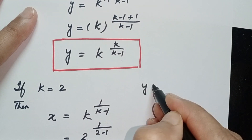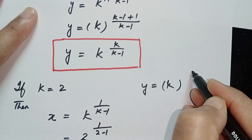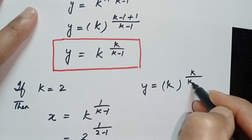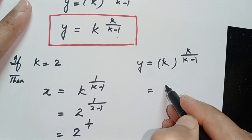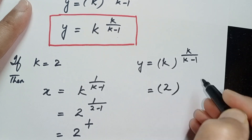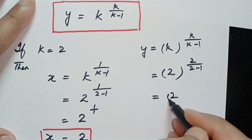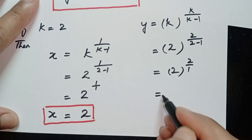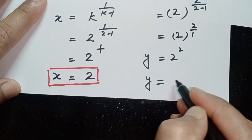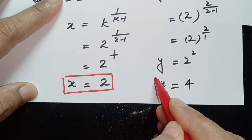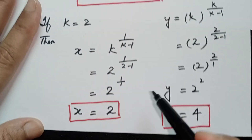Now we find y. y is equal to k to the power k over k minus 1. Plugging in k equal to 2: y is equal to 2 to the power 2 over 2 minus 1, which is 2 to the power 2 over 1, so 2 to the power 2. Therefore y is equal to 4. These are the two values x equal to 2 and y equal to 4 for k equal to 2.